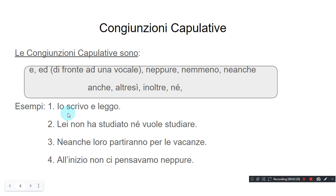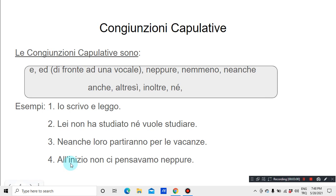Esempi. Io scrivo e leggo — I write and I read. Lei non ha studiato né vuole studiare — She did not study and neither does she want to study. Neanche loro partiranno per le vacanze — They will not be going on holiday either. All'inizio non ci pensavamo neppure noi — In the beginning, we didn't even think about it.